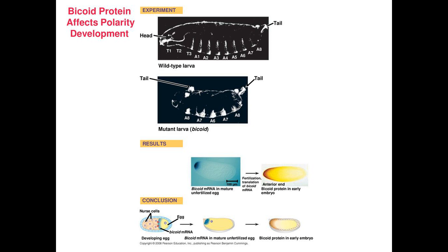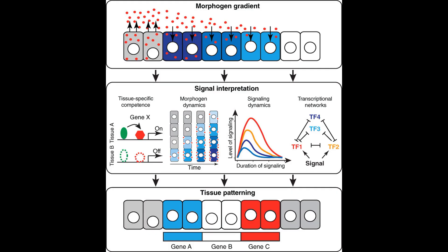They suspected that this bicoid protein is distributed in a gradient along the body axis of the developing embryo, which was later confirmed through experimentation. This led to the hypothesis that gradients of such substances, which are called morphogens, established the body axis and other features during development. The morphogens themselves aren't the direct building blocks for the structures themselves. The bicoid protein isn't the building block for the head of the fruit fly. Instead, the morphogens bind to receptor proteins on cells and induce a signaling cascade that causes transcription factors to regulate the expression of other genes.